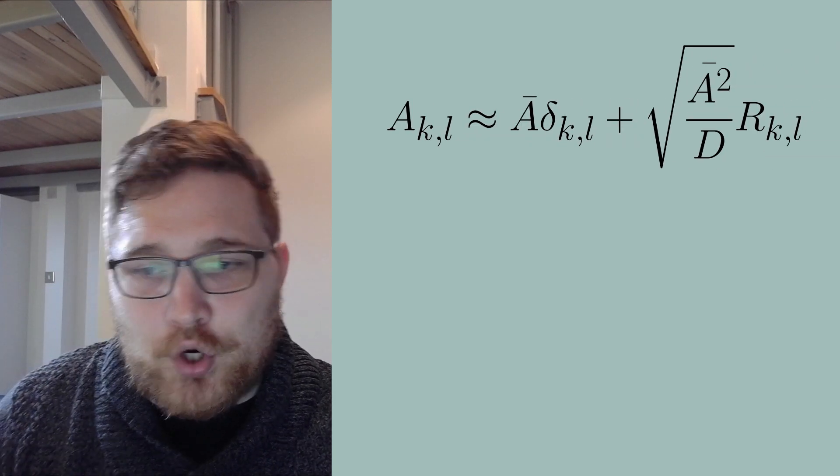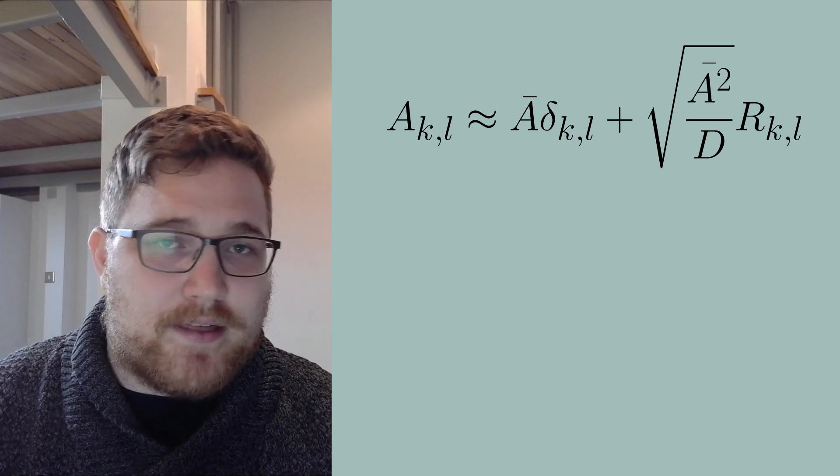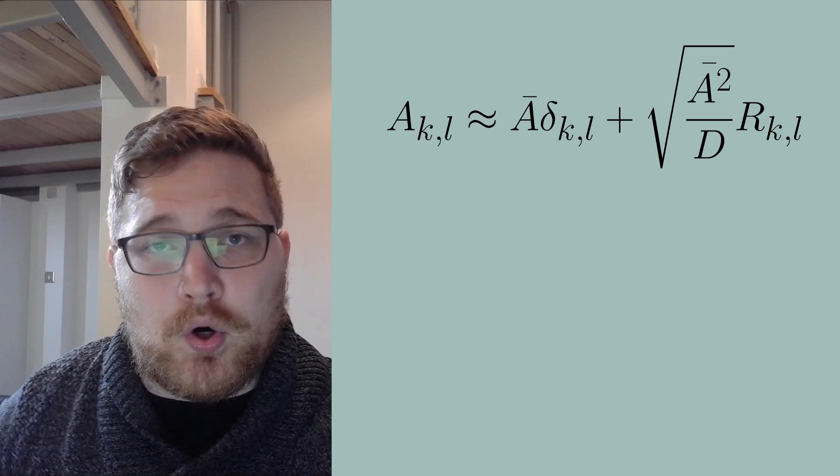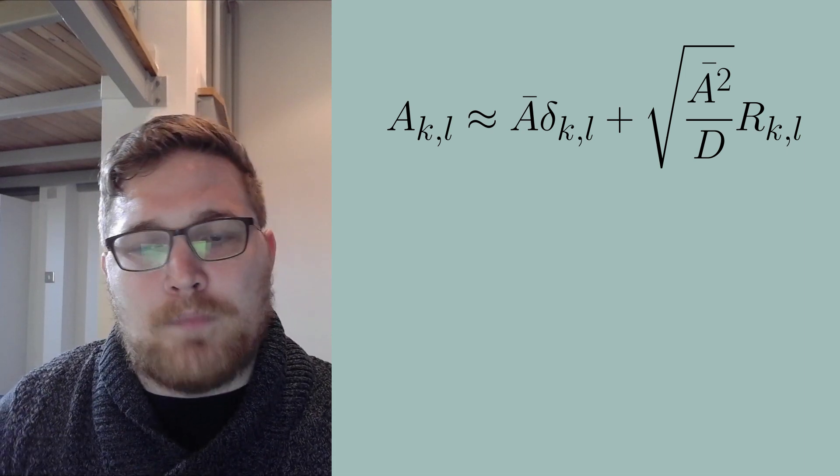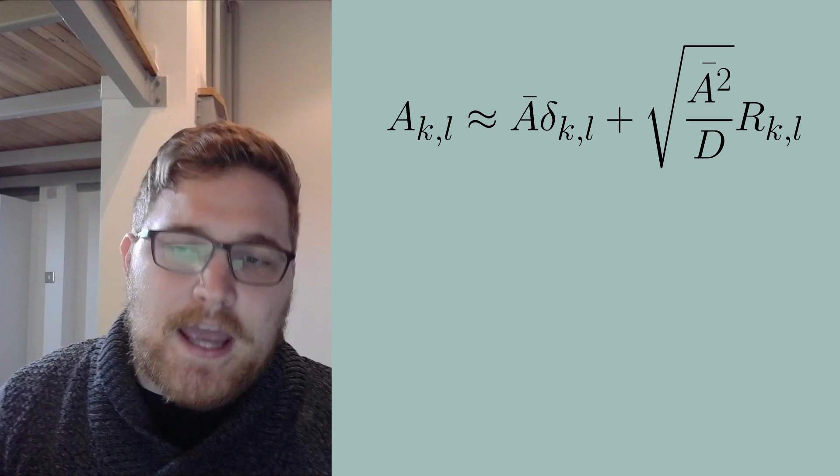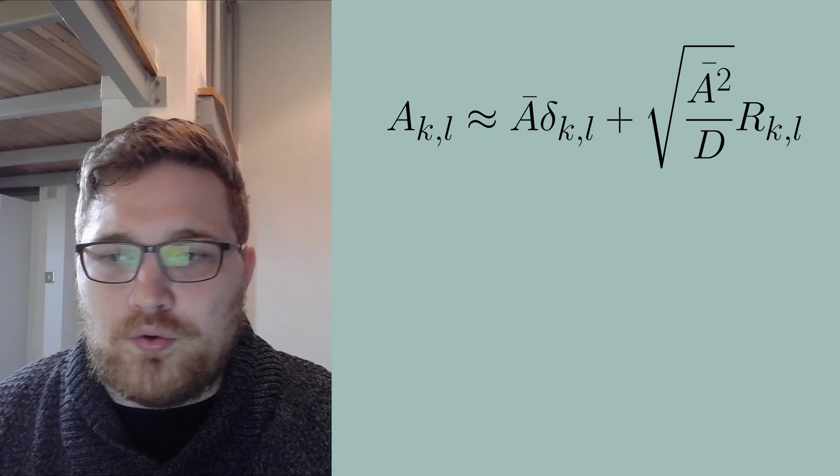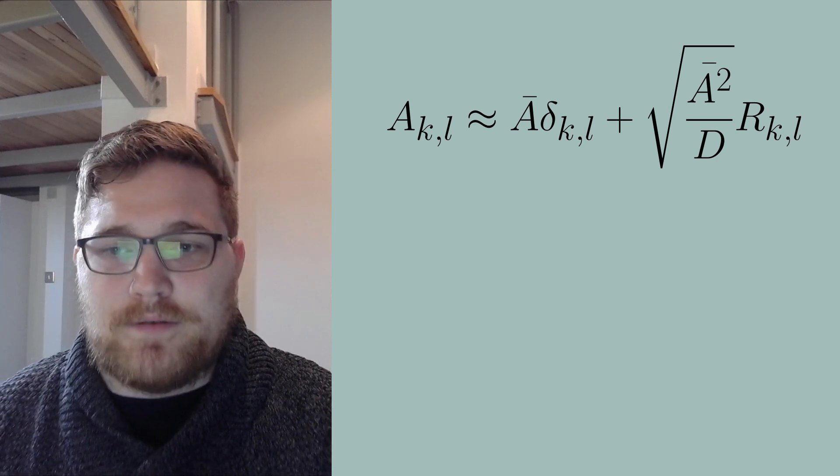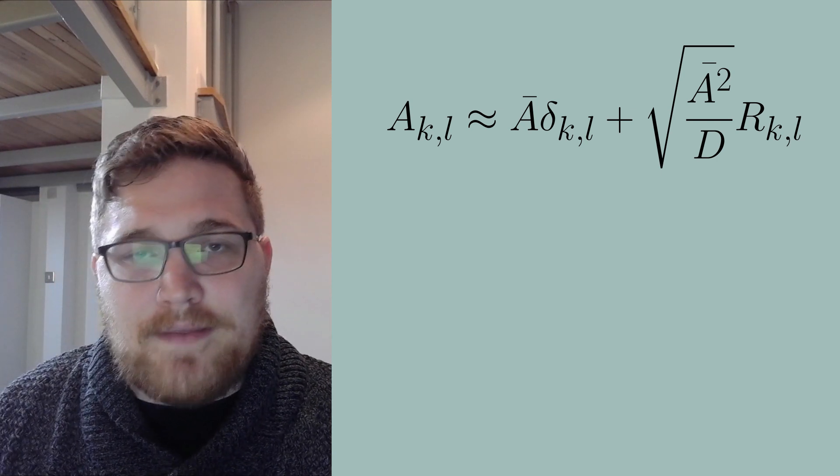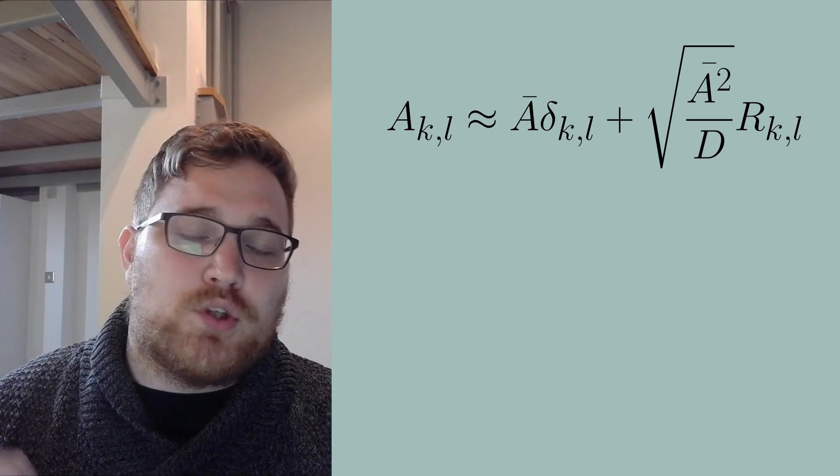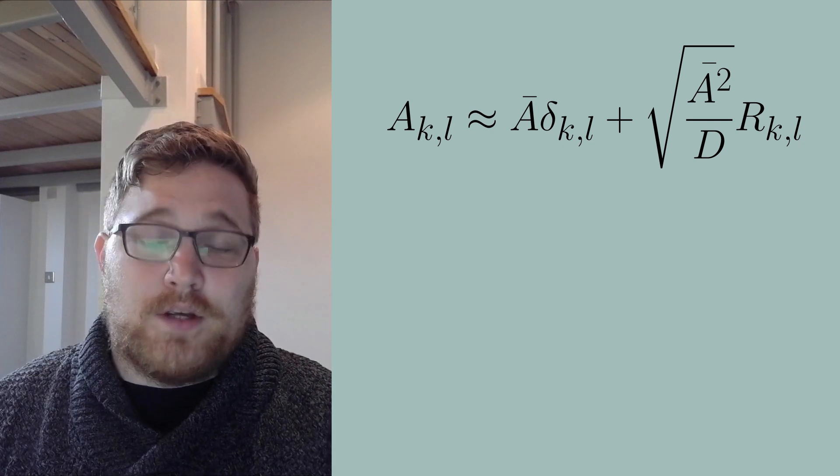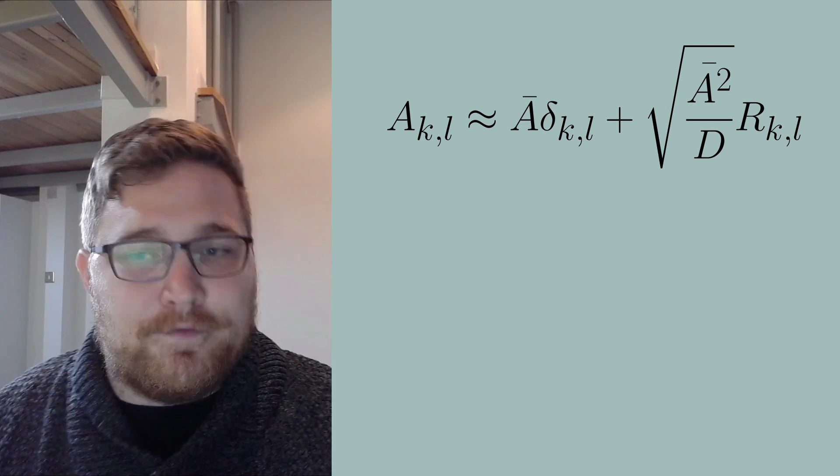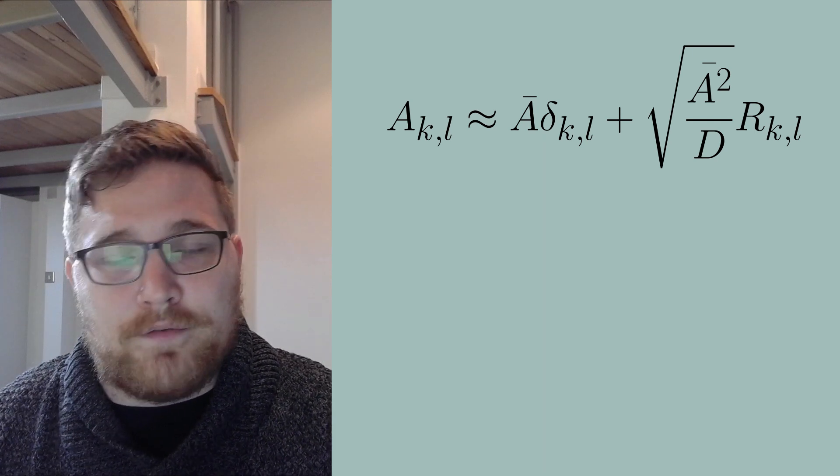So unpacking this equation, it is basically saying that if we look at our observable, our diagonal will be some constant up to small corrections and the off diagonal will be small and randomly distributed. A bar here is related to the average entry we expect when we average over our random matrices. A bar squared is related to the variance of that. And the capital D here is the total Hilbert space size. So this will be a very, very large number. R subscript KL here is a random variable with mean zero and unit variance.